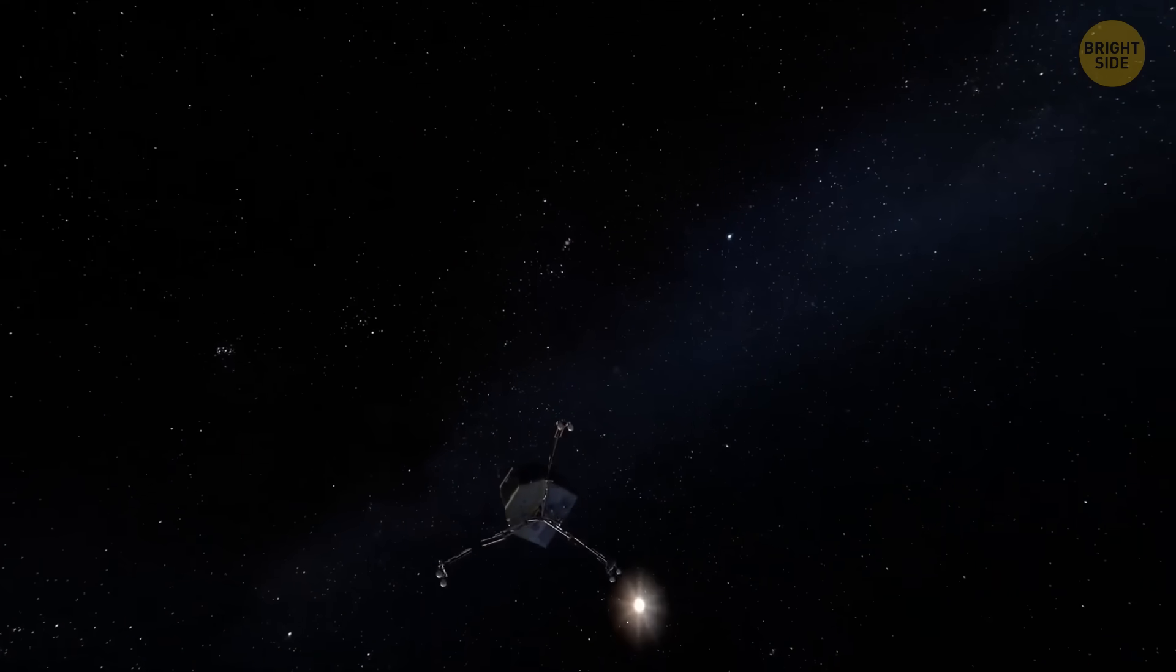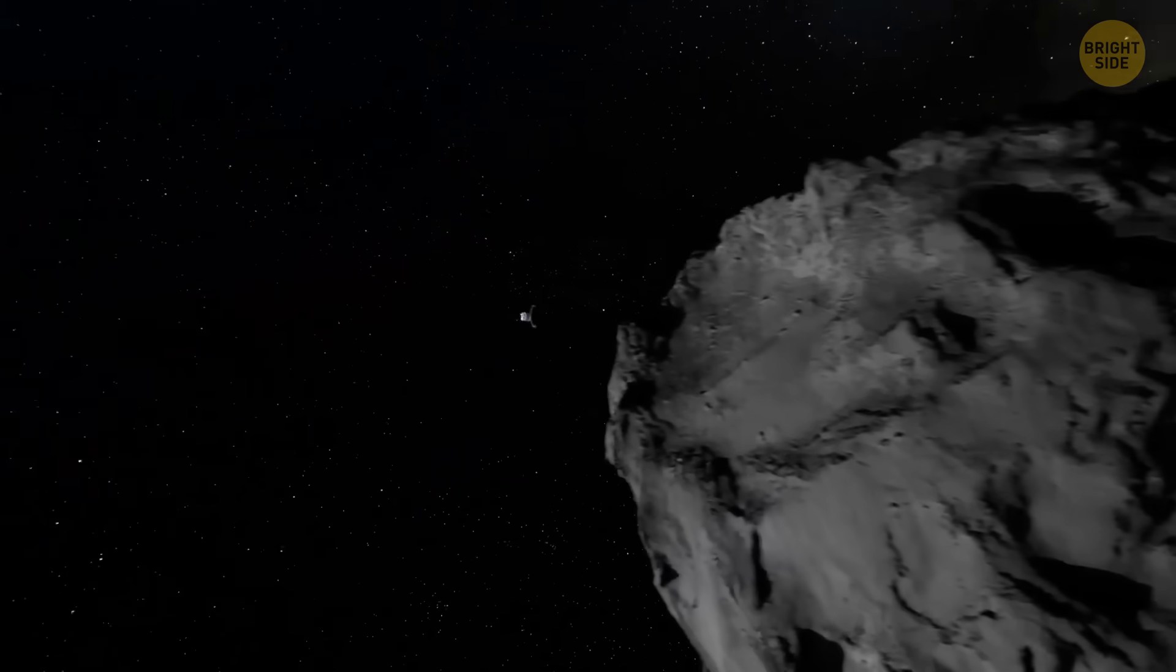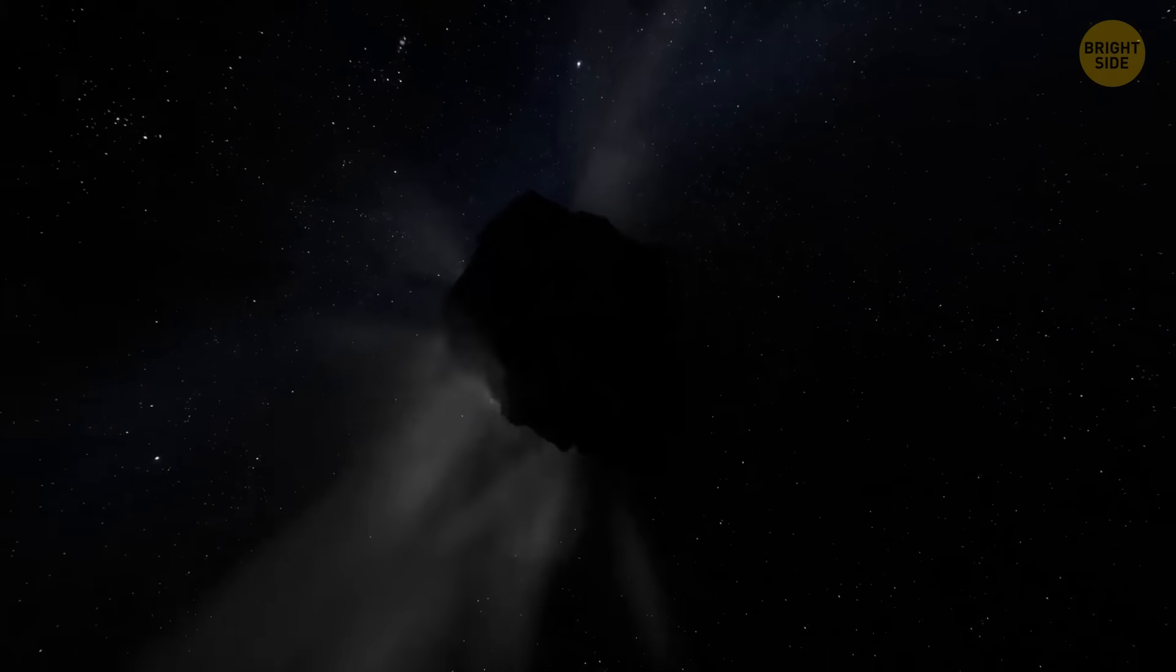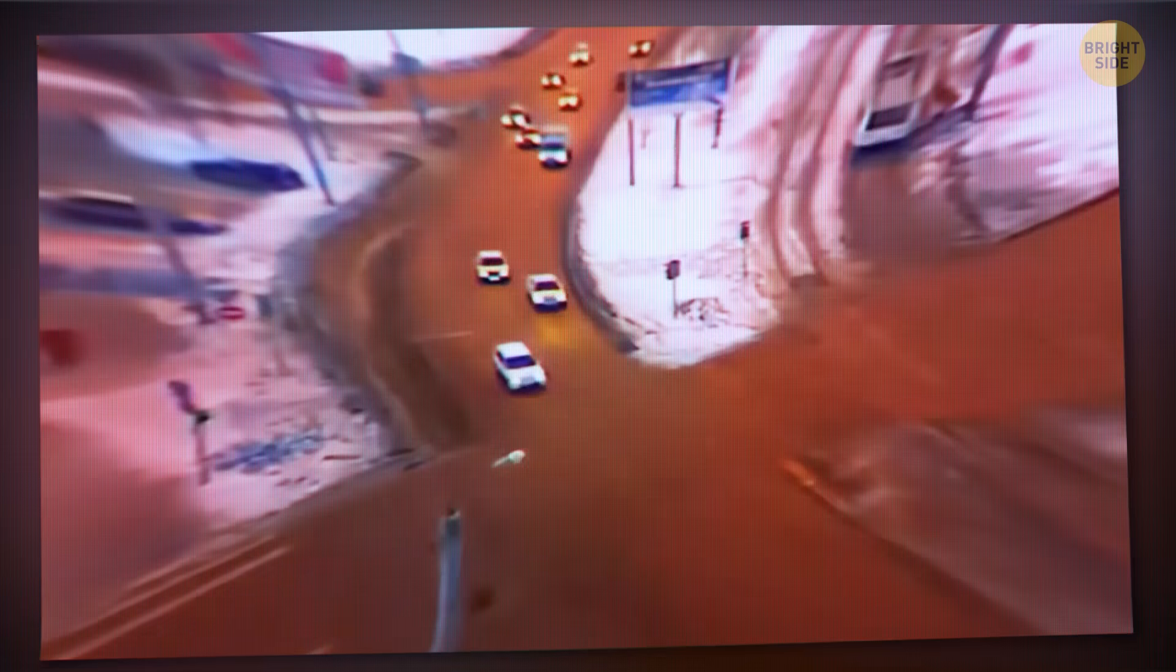We were caught by surprise quite recently. In 2013, the Chelyabinsk meteor came from the direction of the rising Sun. No one saw it in time because it was coming from the wrong direction. It exploded high above the region, shattering windows across the city, and sent more than a thousand people to the hospital. The scariest part is that the meteor was only about 60 feet wide.